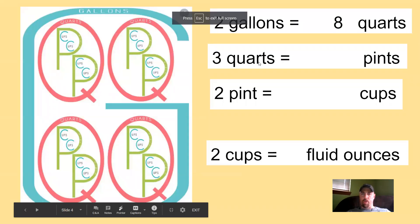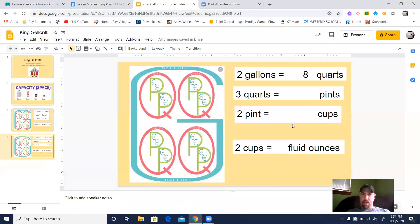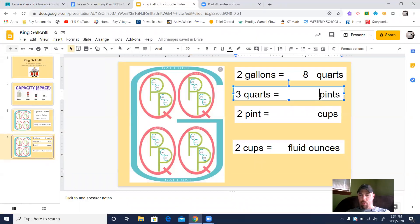Now let's take a look at three quarts. Three quarts, we want to know how many pints that is. So I've got Q, a Q, and a Q, and I've got three Qs. I want to know how many Ps are there, how many pints are going to be inside there. So inside the three Qs, I've got one, two, three, four, five, six. So I have six pints in three quarts.